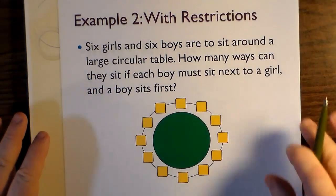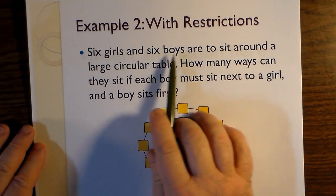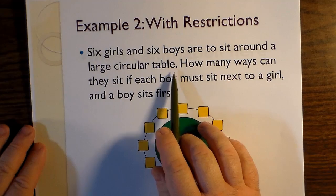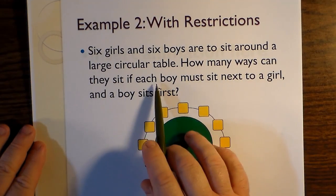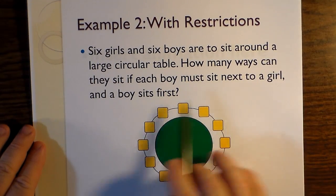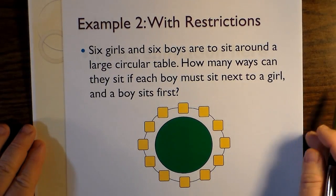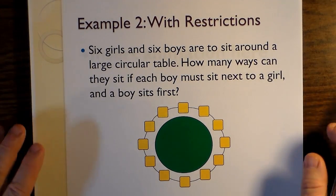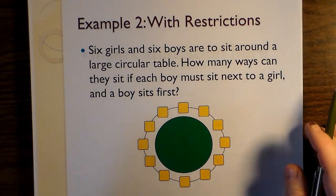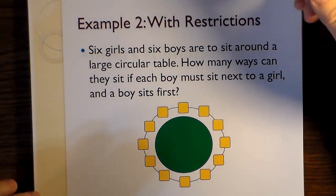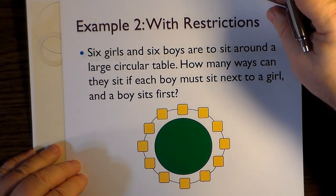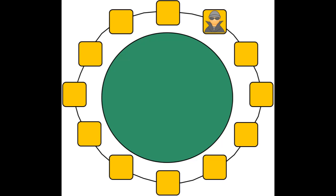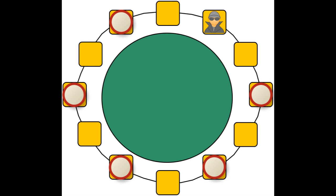How about if we introduce a restriction? Six girls and six boys are to sit around a large circular table. How many ways can they sit if each boy must sit next to a girl and a boy sits first? So each boy sits next to a girl and a boy sits first. So then here we have a situation where a boy chooses the first seat.